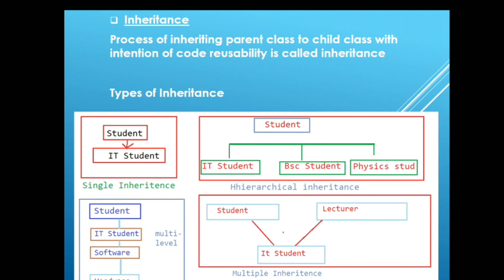The next important pillar in object oriented programming is inheritance. Inheritance is the process of inheriting the parent class to the child class with the intention of code usability. By virtue of inheritance, we can access the members of the parent from the child class. The child class will have its own implementation, plus the additional already implemented member functions and member variables which are public in the parent.